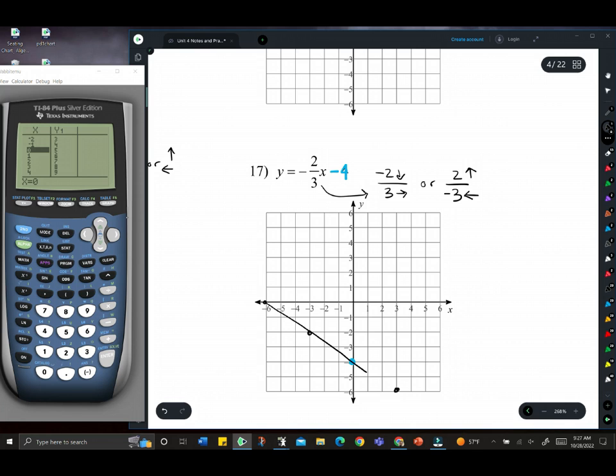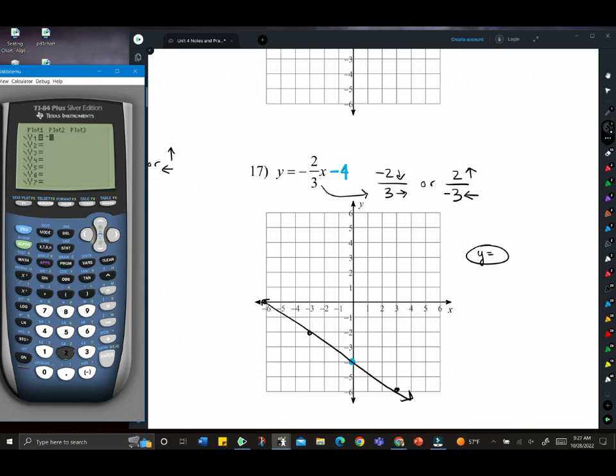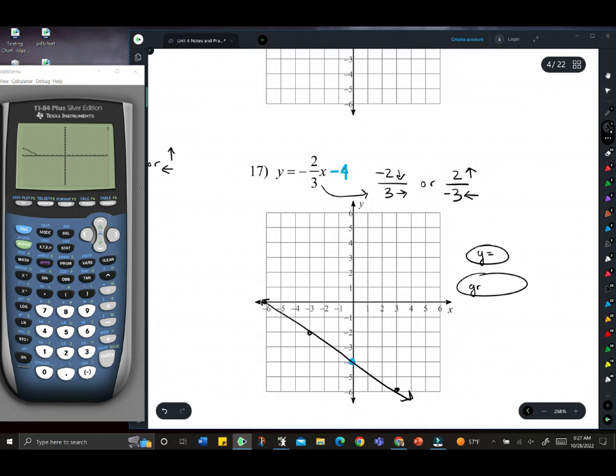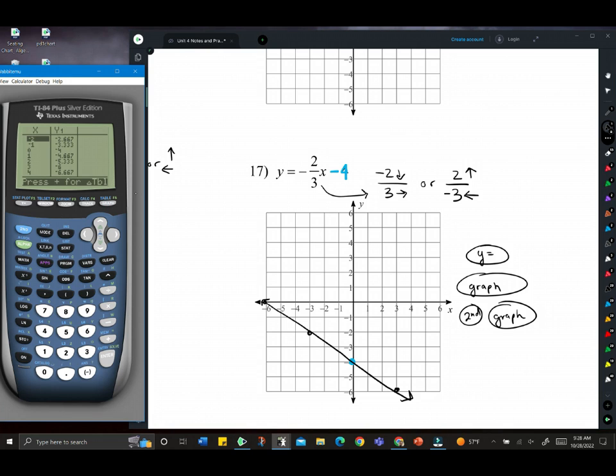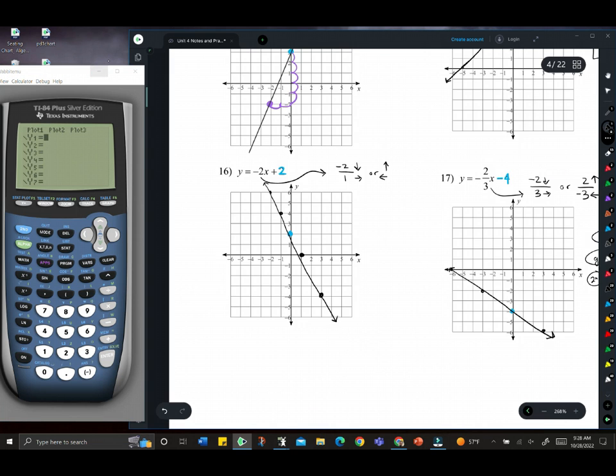When in doubt, use your graphing calculator to check. I'll run through that one more time. Y equals. These are the buttons on your calculator. Type in the equation: negative 2 thirds x minus 4. Hit graph. That gives you an idea of what direction it should be going. If you want, you can hit second and then graph. Second graph. That takes you into the table where you can plot values. So those are graphs from y-intercept form.